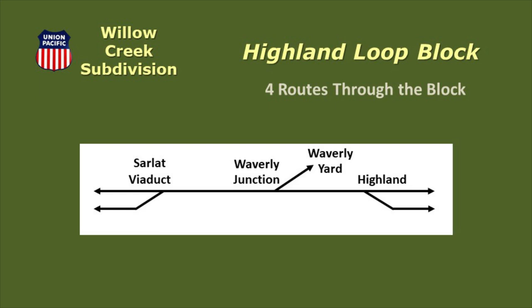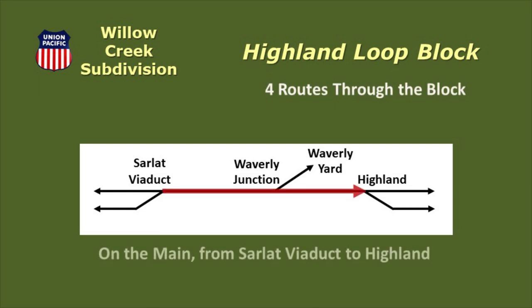A train can travel on the main line from Sarlott Viaduct to Highland, and a train can travel the opposite direction on the main line.